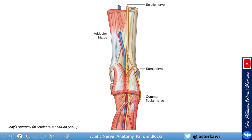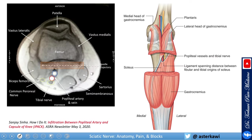With the biceps femoris removed, you can see the adductor magnus and the adductor hiatus. This is clinically important — as I mentioned in my adductor canal block lecture, if you go more distal you have a risk of local anesthetic spreading through the adductor hiatus to the posterior compartment and potentially affecting the sciatic nerve.